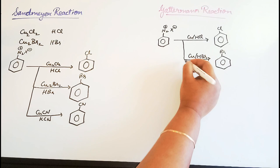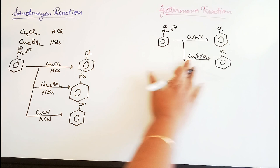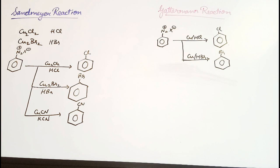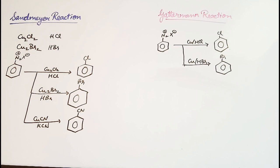In this reaction it's only these two. So here the copper powder in the presence of a particular halogen acid leads to the formation of the corresponding haloarene. So that's the main difference between these two.